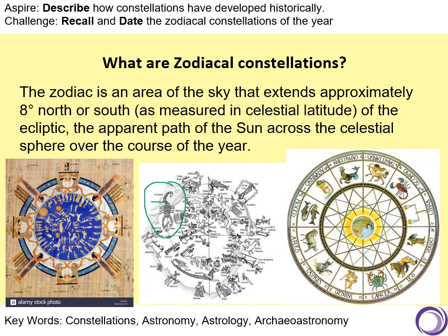We make horoscopes from them — they talk about star signs. So we've got, in no particular order: Gemini, Cancer, Leo, Virgo, Libra, Scorpio, Sagittarius, Capricorn, Aquarius, Pisces, Aries, Taurus.